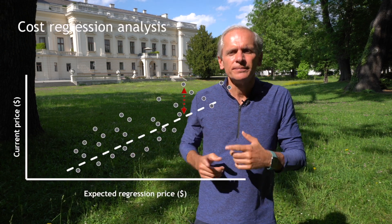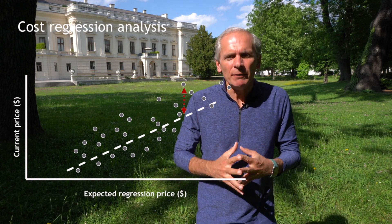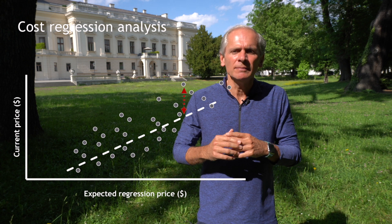What you do here is that for a category of products you simply collect specifications and prices and throw all of this into a multivariate regression model. If you don't know how to build such a model, turn to a business school graduate for help — all of them had to do it for coursework. The model will determine which of the specifications are actually cost drivers and then deliver a graph that compares the actual price to the expected price.